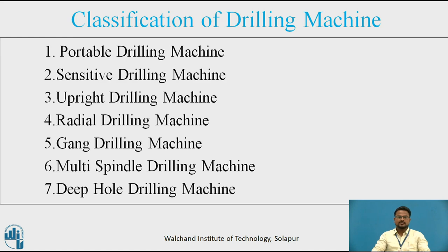Coming to the radial drilling machine. The radial drilling machine is used for drilling medium and large holes. The main advantage of the radial drilling machine is that holes at different points and also at different angles can be drilled on a large job without moving the job.